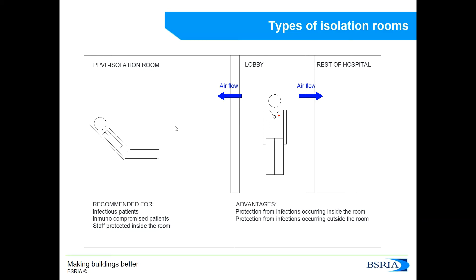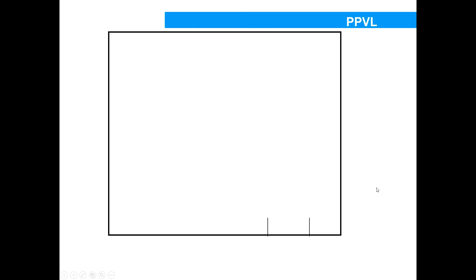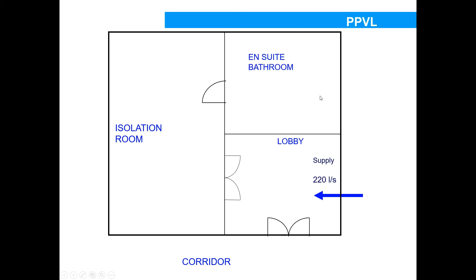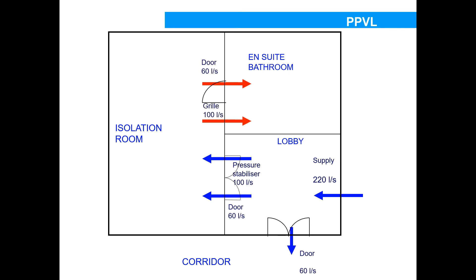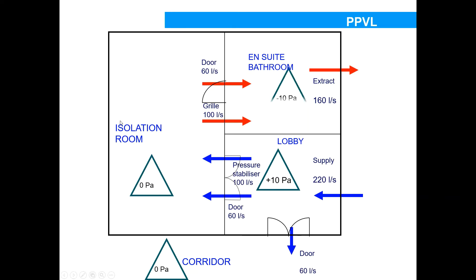These rooms can be used for both immunocompromised and infectious patients. One of the designs that BISRIA has tested and validated — and the design we are looking at for air tightness tests today — consists of an entrance, a positively pressurized ventilated lobby, the patient's room or isolation room, and the en suite bathroom. Air is supplied mechanically into the lobby; the lobby gets pressurized. Some air goes through gaps in the door into the hospital or into the patient's room. Most air goes through the pressure stabilizer above the door — approximately 100 litres per second — into the isolation room, where it mixes, dilutes contaminants, and is then extracted through the en suite bathroom, filtered, and expelled outside.